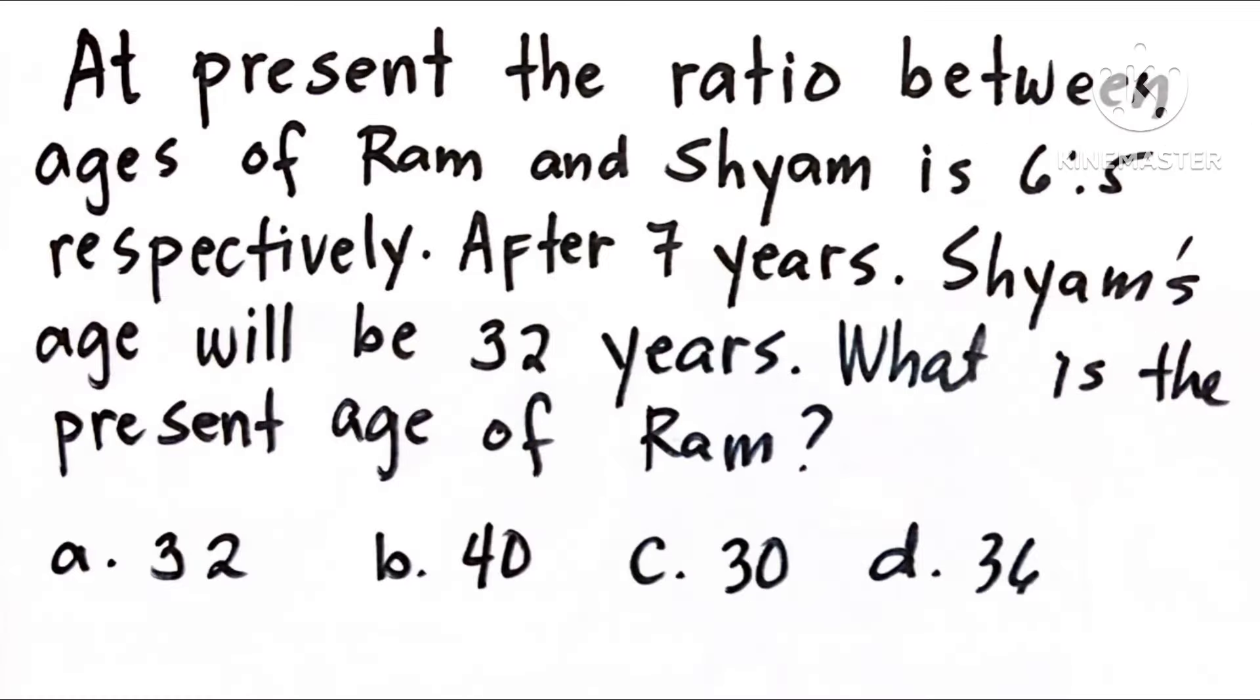Here is our sample problem. At present, the ratio between ages of Ram and Shyam is 6 to 5 respectively. After 7 years, Shyam's age will be 32 years. What is the present age of Ram? Options: A. 32, B. 40, C. 30, D. 36.